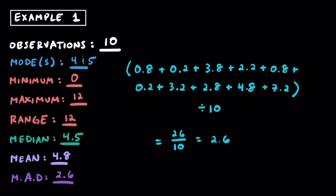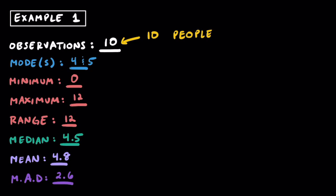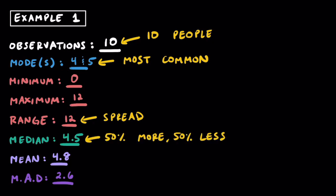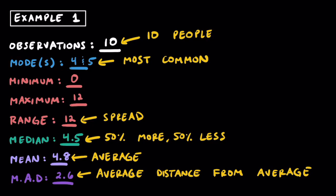The MAD tells us that while the average number of slices eaten was 4.8 among these 10 students, on average they ate 2.6 slices away from the average of 4.8. To summarize: the 10 represents the number of people surveyed; 4 and 5 are the most frequent slices eaten; 0 and 12 are the minimum and maximum; the range of 12 shows a pretty big spread; the median of 4.5 means half the people ate more and half ate less; the mean of 4.8 is the average; and the MAD of 2.6 represents the average distance from the average.